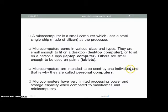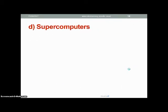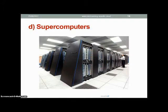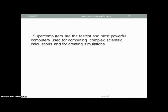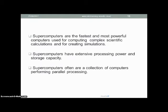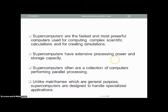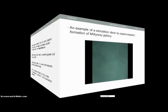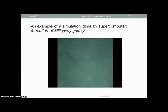Microcomputers have very limited processing power and storage capacity when compared to mainframes and minicomputers. Supercomputers, on the other hand, are very powerful computers — very large in size, and the fastest and most powerful computers available. They are used for making complex scientific calculations and for creating simulations. Supercomputers have extensive processing power and storage capacity, and they are usually a collection of computers performing parallel processing. Unlike mainframes, which are general purpose, supercomputers are designed to handle specialized applications such as simulations.